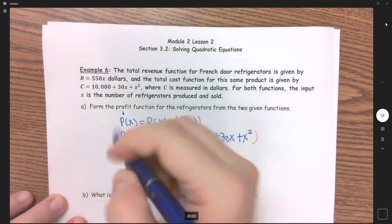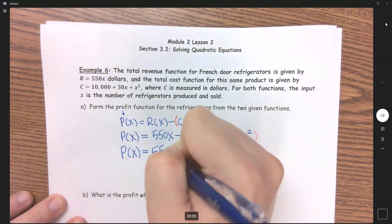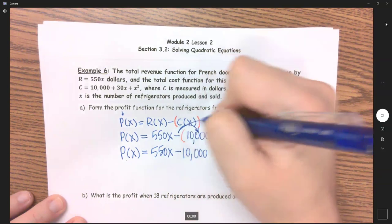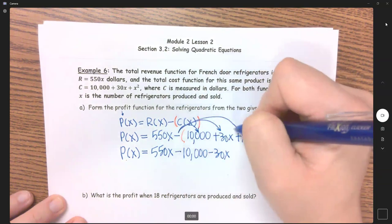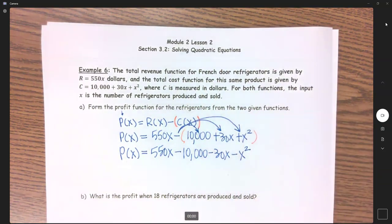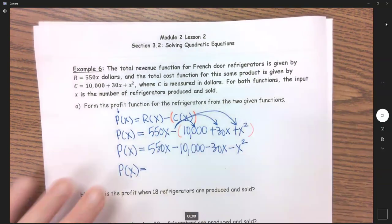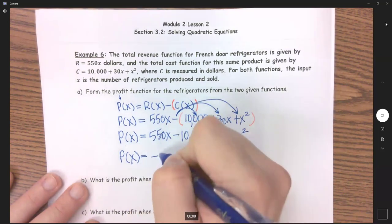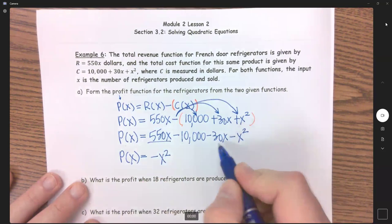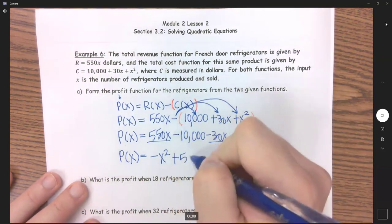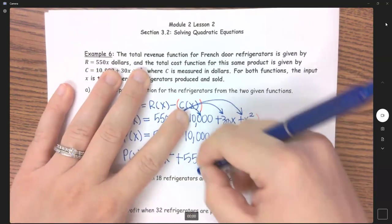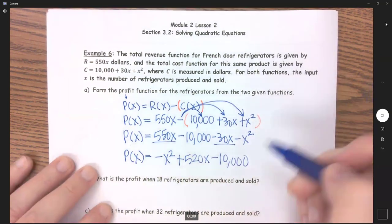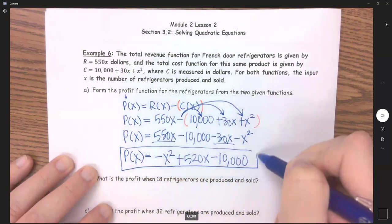So distribute in that negative. We have P(X) equals 550X minus 10,000 minus 30X minus X squared. So my final answer to get my P of X is to combine like terms. I'm going to put this in descending order as well. So X squared comes first, so we get negative X squared. 550X minus 30X gives me plus 520X, and then minus 10,000. There is my profit function.